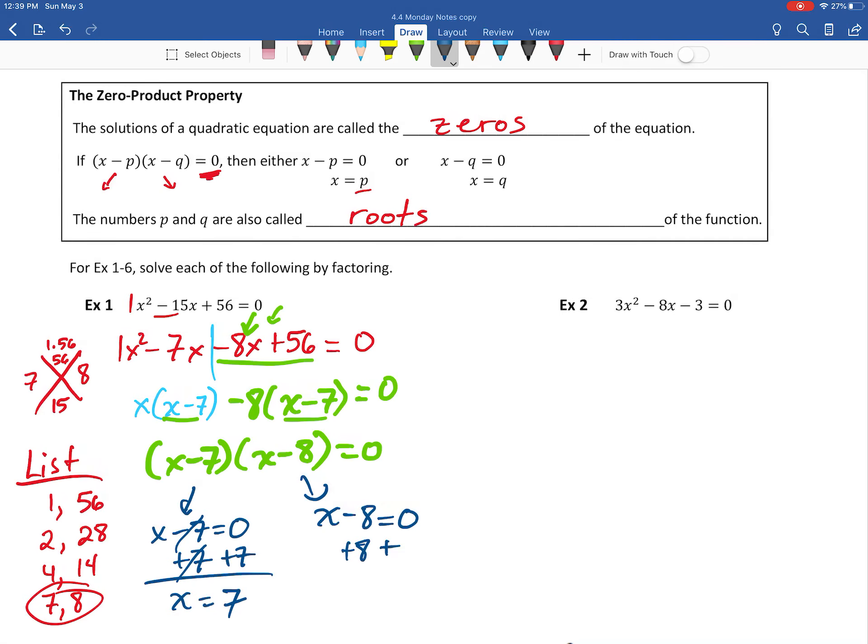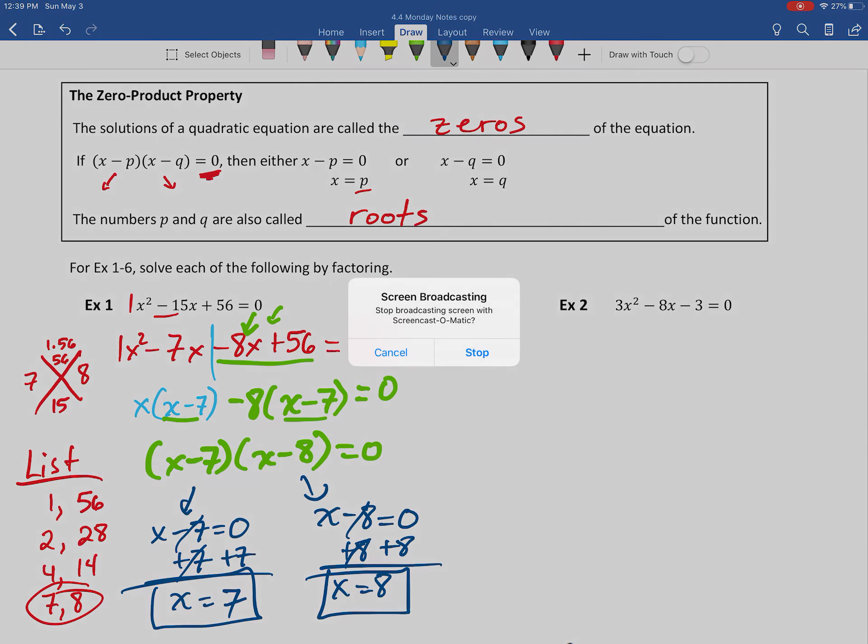And then you would just solve each one individually. So we would add seven to both sides and get x equals seven. Here you would add eight to both sides and x equals eight. So there, what we've done is we have solved for this particular quadratic by factoring. Again though, that is example one from our 4.4 set of notes.